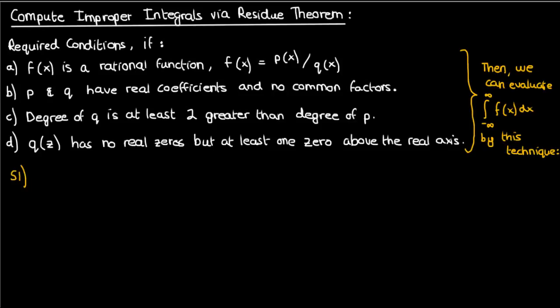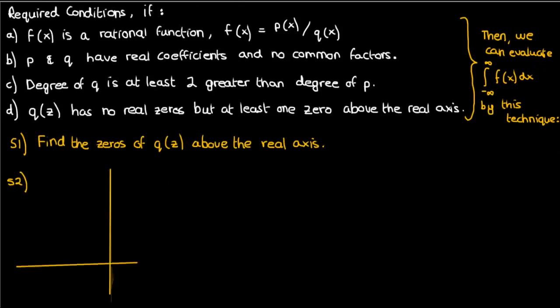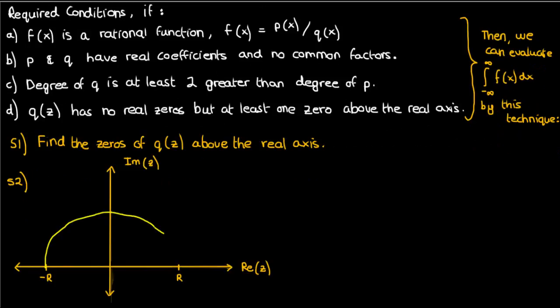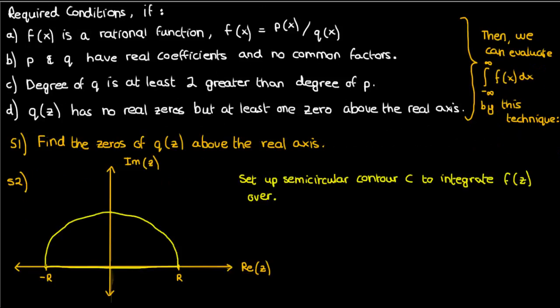The first step of this technique is to evaluate all the zeros of q of z that are above the real axis — in other words, find all zeros that have a positive imaginary part. The second step is to set up a closed semicircular contour which we'll be integrating f of z over. I'll call that closed curve C.